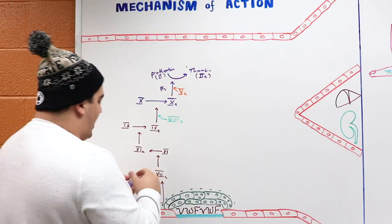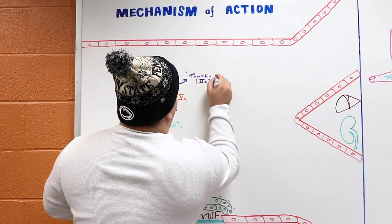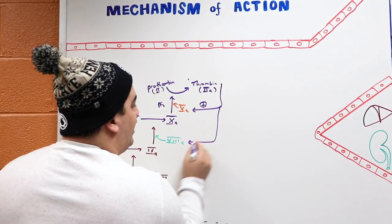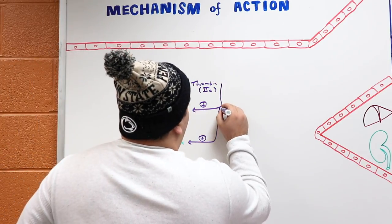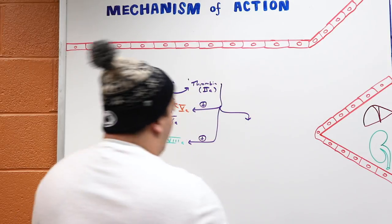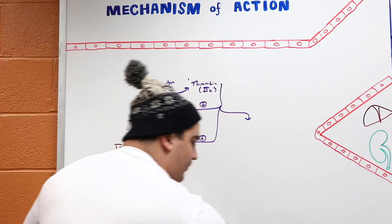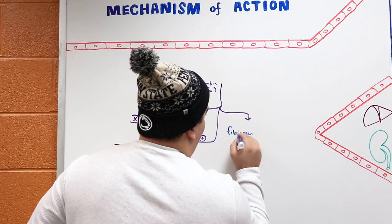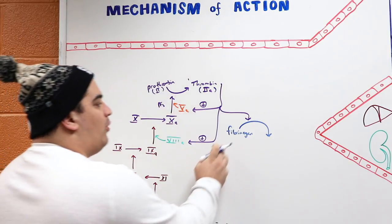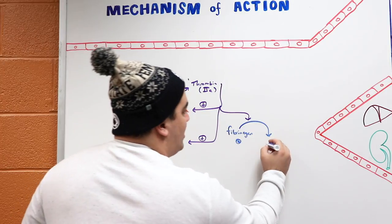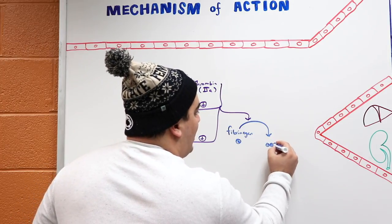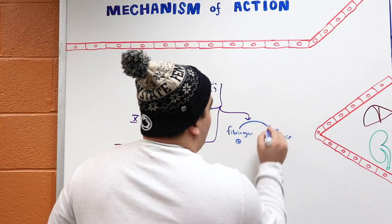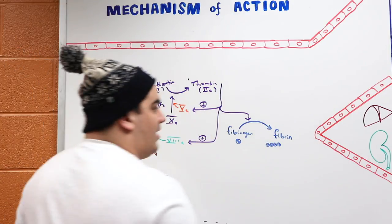Thrombin then does several things: it activates factor 5, it activates factor 8, and it comes over and activates fibrinogen. Fibrinogen is a soluble protein, but when you polymerize fibrinogen molecules together, you get fibrin, which is an insoluble protein. Fibrin makes the blood more viscous and thick to help with the coagulation process.